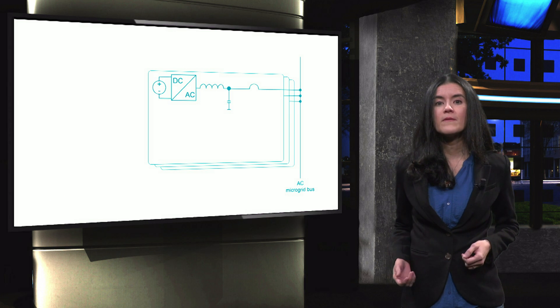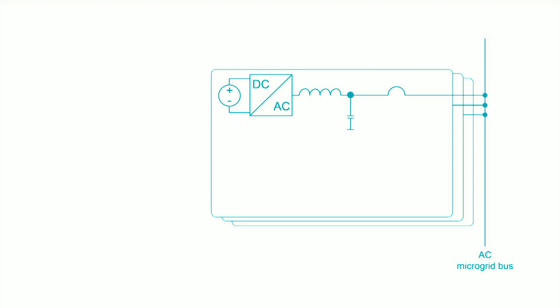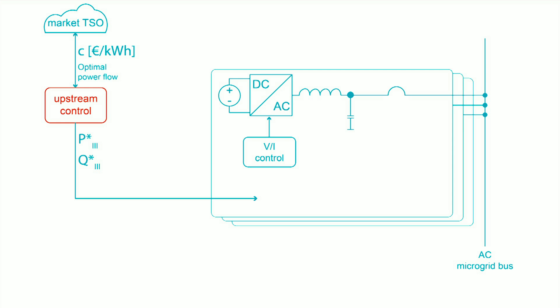Here, we can see an example of the implementation of hierarchical control in a distributed generation system. Local control acts on power electronics interfaces that connect generators, loads and batteries to the microgrid bus. The control that acts on the power converter here, a DC to AC inverter, is based on voltage or current. On the very high level, upstream control provides the unit with active and reactive power setpoints, considering market and price signals retrieved from the transmission system operator, or TSO, or the distribution system operator. At this level, control is responsible for the optimal power flow in the microgrid.